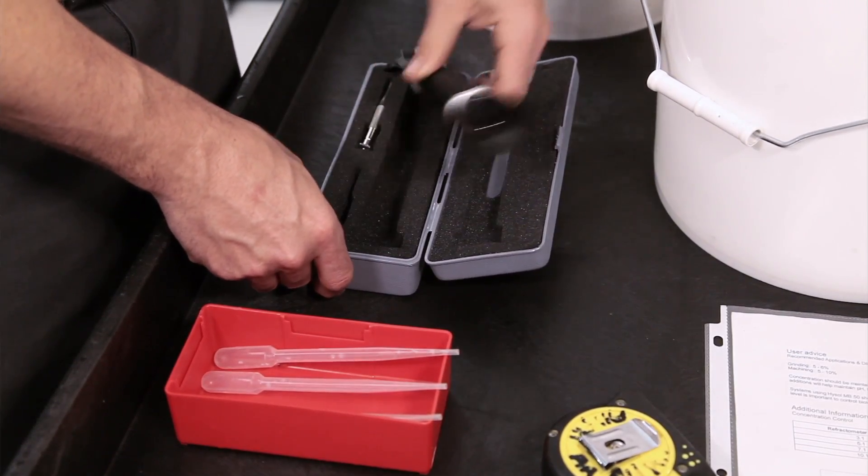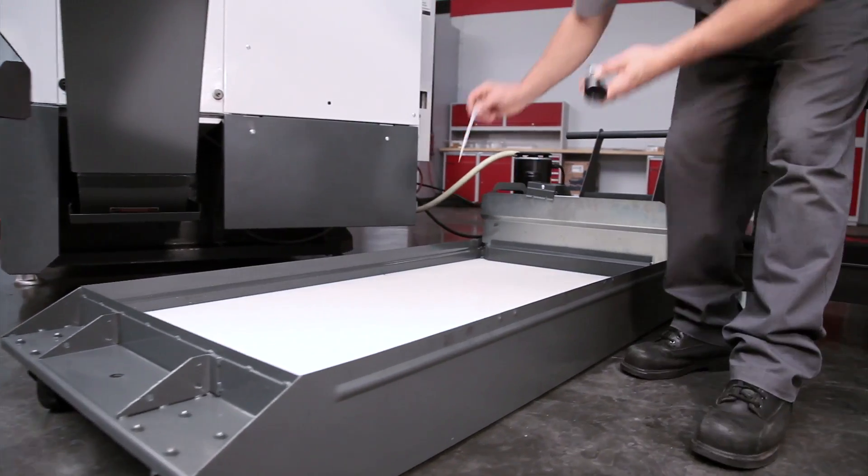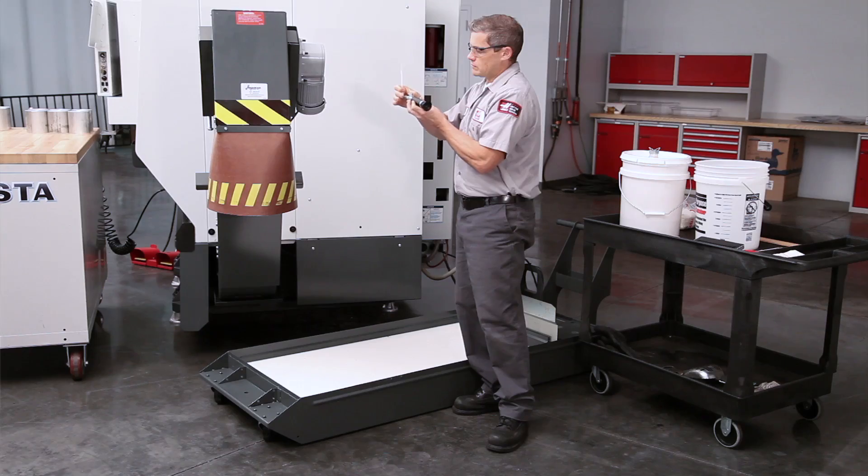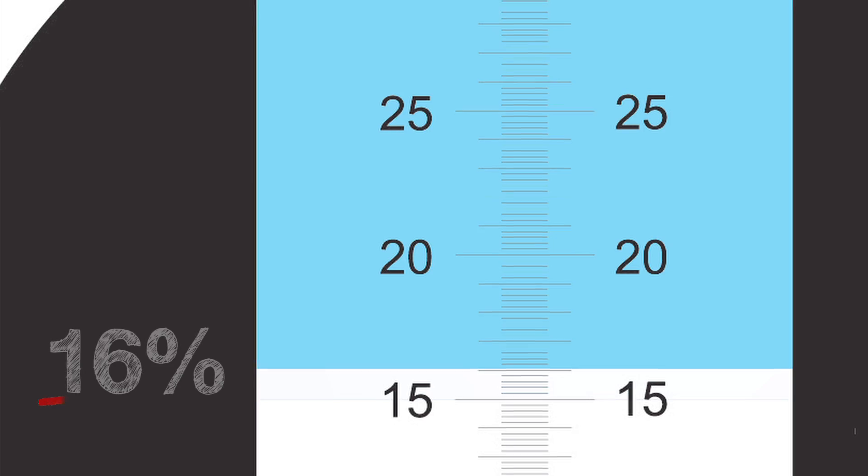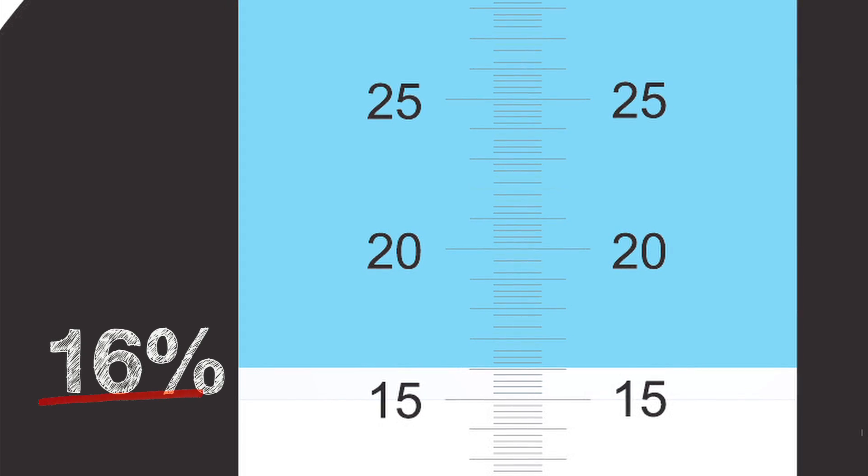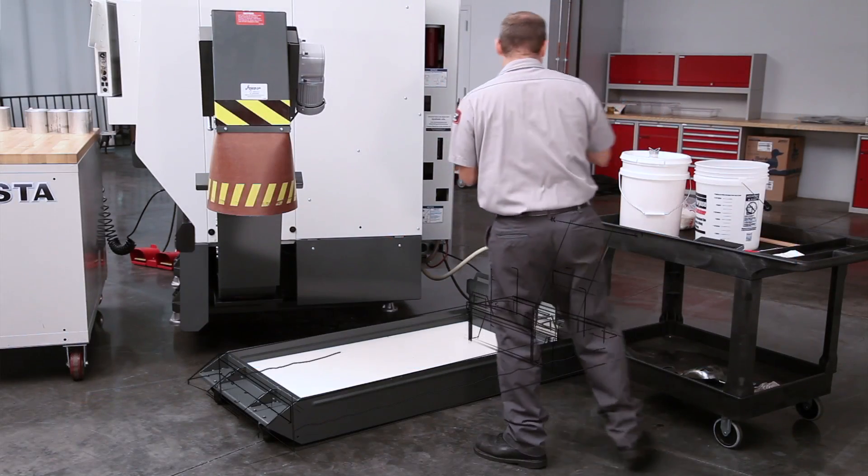Check the concentration of your coolant with a refractometer. Be sure to check out our Tools of Coolant video for more information about this essential tool. The concentration of our coolant is 16%, definitely placing it on the rich side.